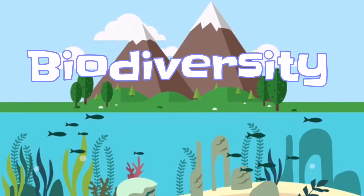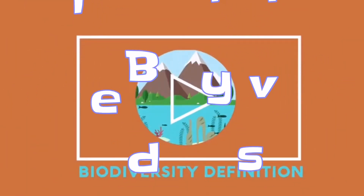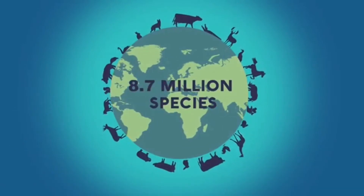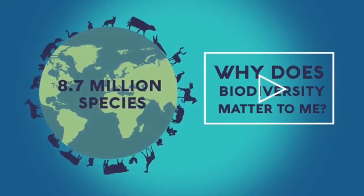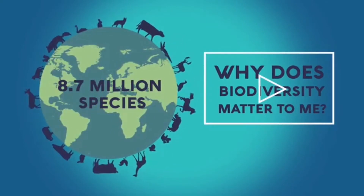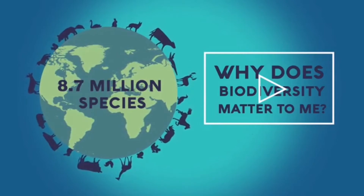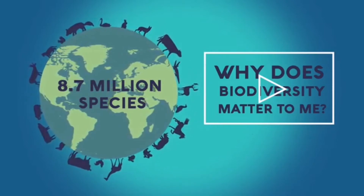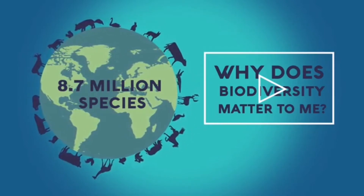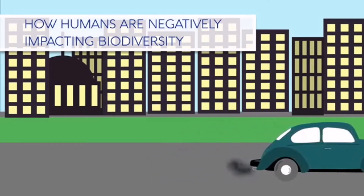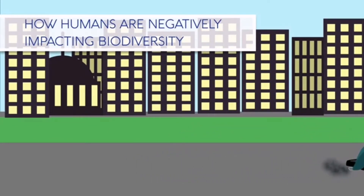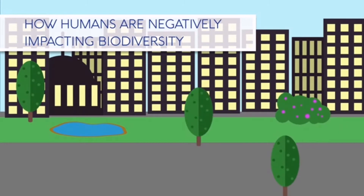What do you know about biodiversity? Biodiversity is the variety and variability of life on Earth. There are 8.7 million species on planet Earth, and as we saw in this video, biodiversity is of utmost importance to humans. The loss of one key species can have a detrimental impact on many levels, from other species of animals to plants to the physical environment.